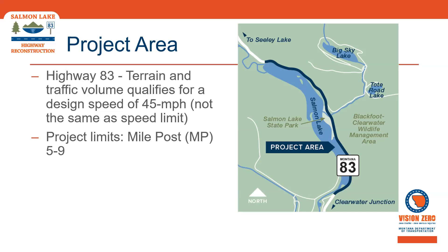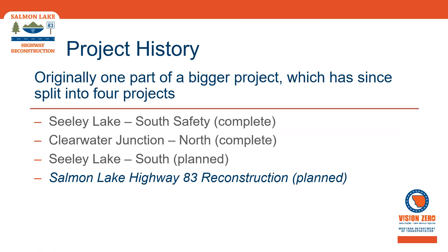A little bit of the project history: originally the Salmon Lake Highway 83 reconstruction project was going to be one project extending all the way from the Clearwater Junction at the south end to the north end of Seeley Lake. But that was a massive project and from a funding standpoint very difficult to put together all in one shot. So it was broken apart into four different projects.